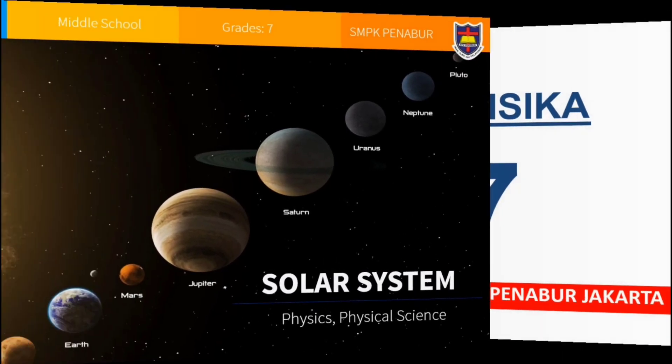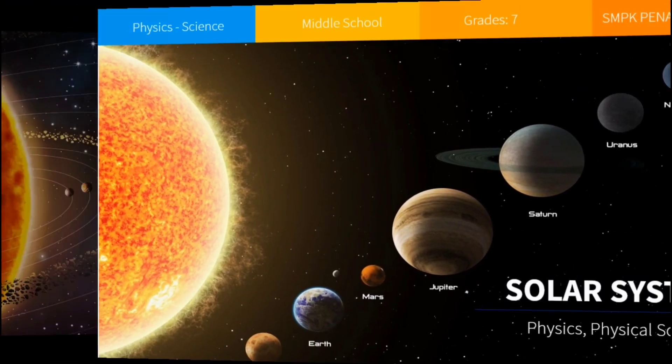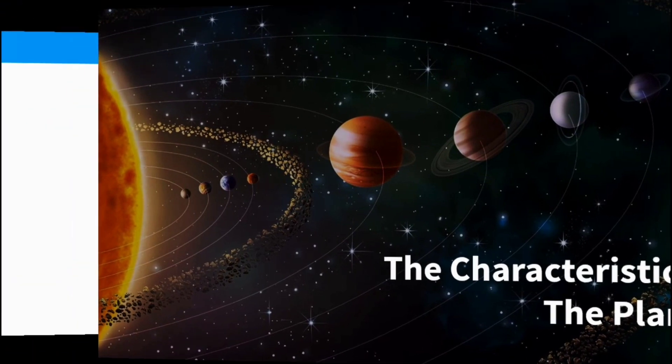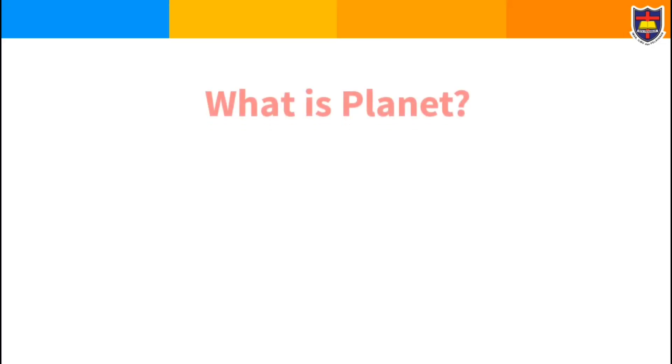Hi guys, as I mentioned earlier, today we are going to learn about the characteristics of planets. Now as we begin, we have to answer this question first: what is a planet? Okay, the simple answer: a planet is a celestial body that is in orbit around the Sun.